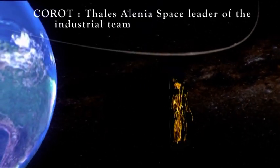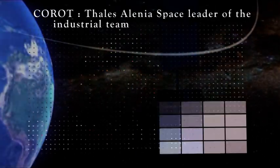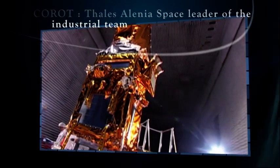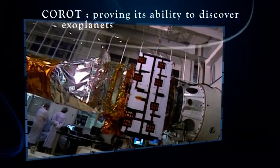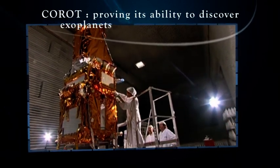From 2007, continuous observation for 150 days enabled the satellite CORO to discover and confirm two planets orbiting other stars outside our solar system.